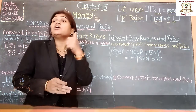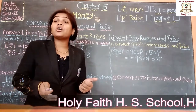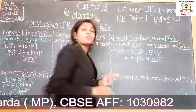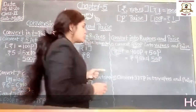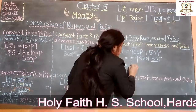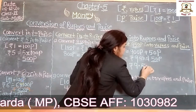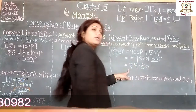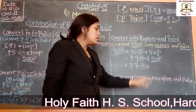A dot is used to separate the rupees and the paise. The number on the right side of the dot denotes the paise, and the left side denotes the rupees. So we can write it as rupees 9.50 — meaning 9 rupees and 50 paise. Both parts are now separated.